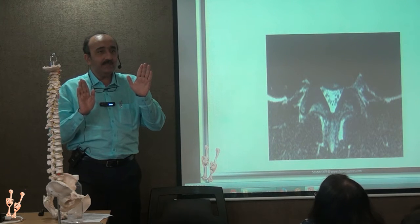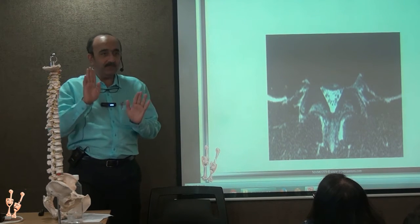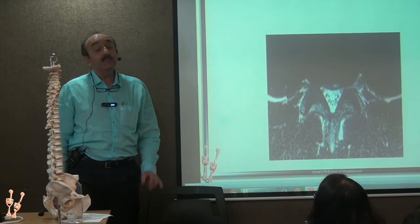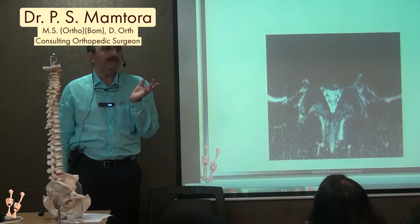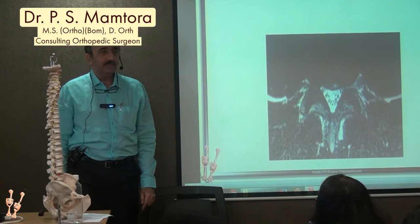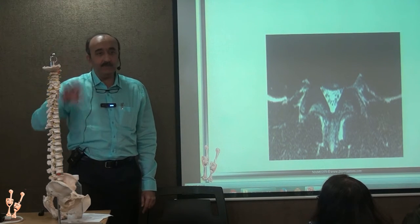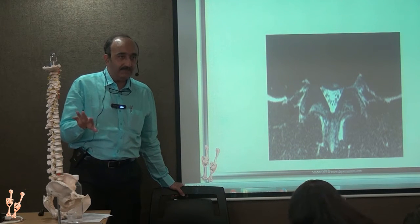The ASIS or the medial malleolus, or both, will be distal or proximal on that side. And sclerosis on x-ray, that is condensans iliae. Condensans iliae is idiopathic and does not need treatment. That's the entire joint line. The entire joint line on the iliac side is sclerosed. So that's condensans iliae. That's idiopathic and does not need treatment.